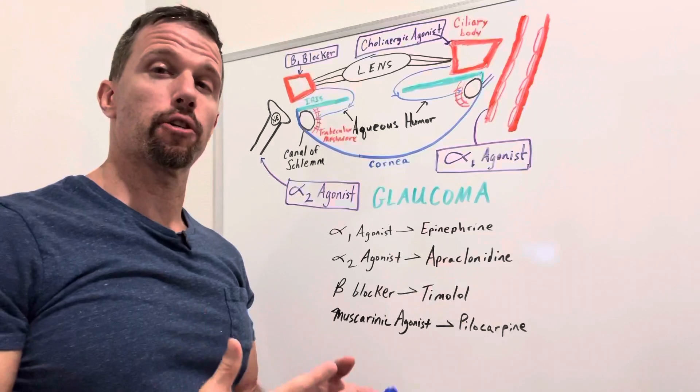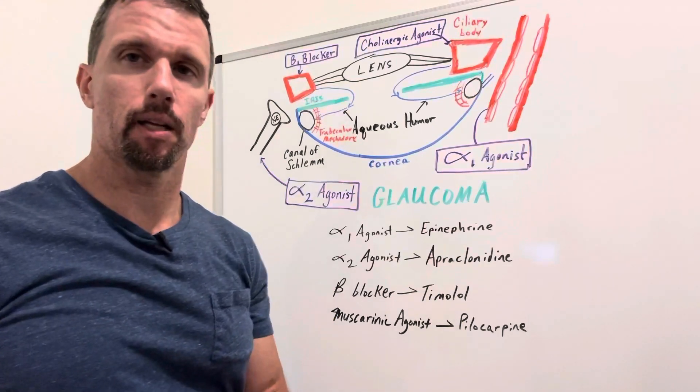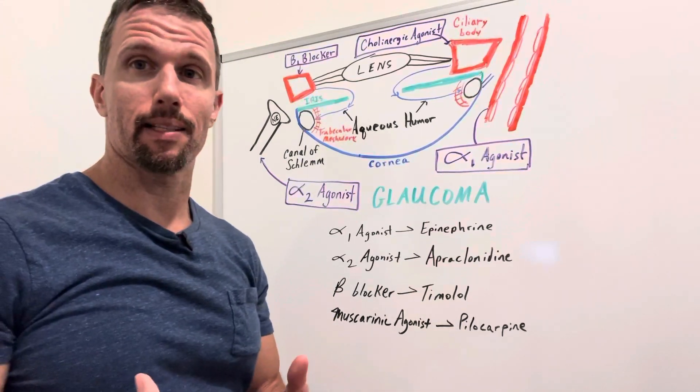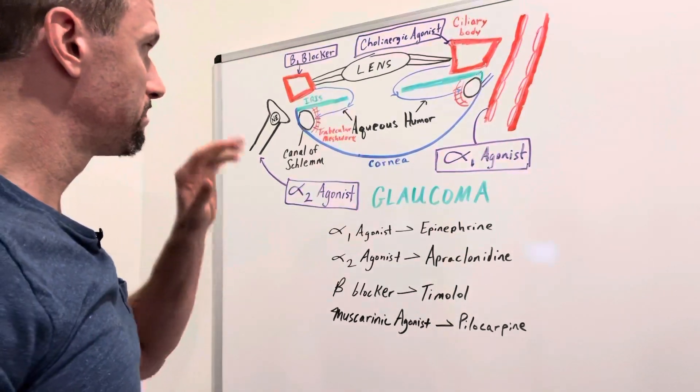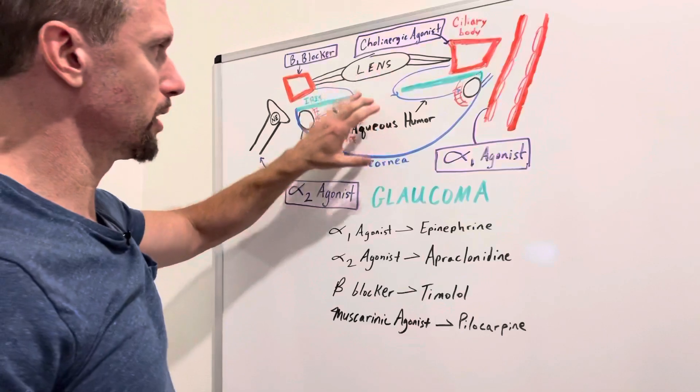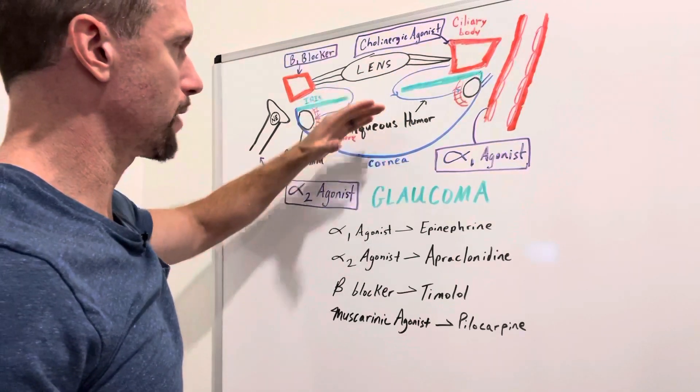And this calls a degenerative optic nerve neuropathy. So it can cause blindness by damaging the optic nerve. So glaucoma is this increased intraocular pressure with the aqueous humor.